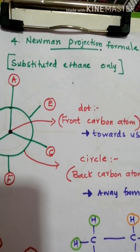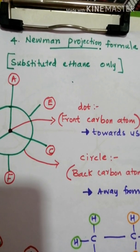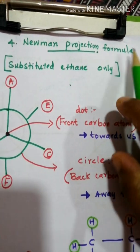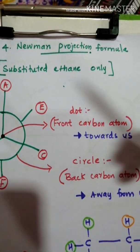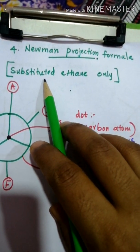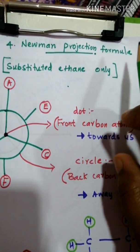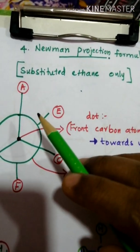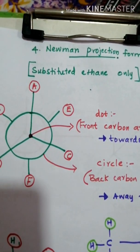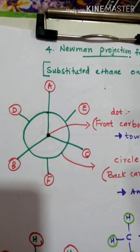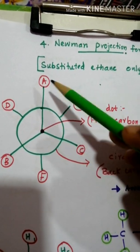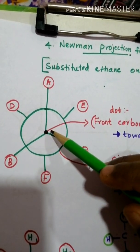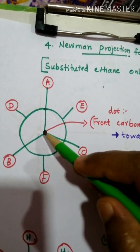In this video class we are discussing the Newman projection formula. This projection is applicable only in the case of substituted ethane — it is not applicable in the case of methane. We select a circle and different kinds of bonds for the general representation of the Newman projection.